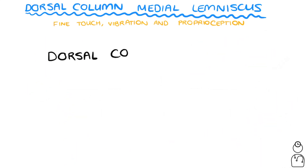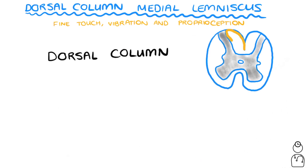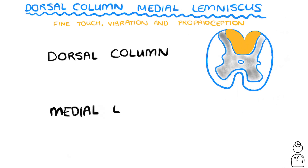It is now easy to understand where the pathway gets its name. The dorsal columns refer to the white matter containing the fasciculus cuneatus and gracilis, whilst the medial lemniscus pathway is the name for the bundle of nerves heading up to the thalamus.